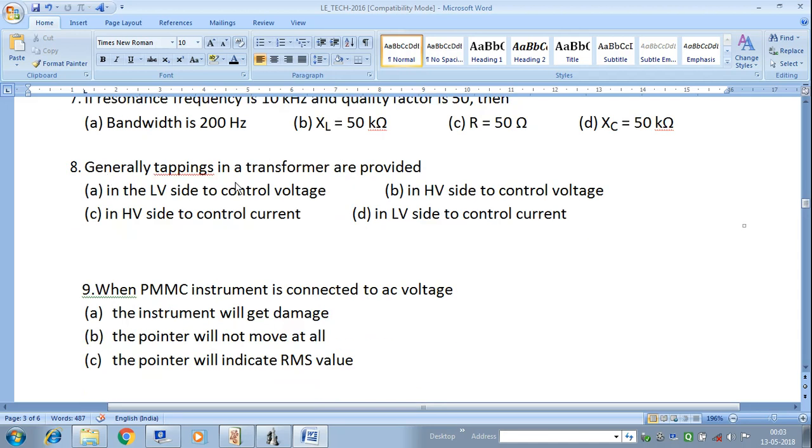Next question: Generally tapping in a transformer are provided in the high voltage side to control voltage. Answer B is correct. By providing tapping in high voltage side, better voltage regulation will be achieved. Therefore, to control the voltage in high voltage side, generally tapping is provided.